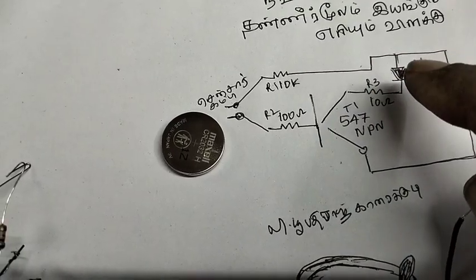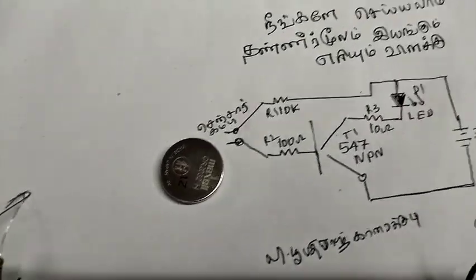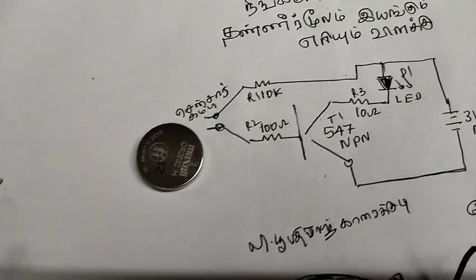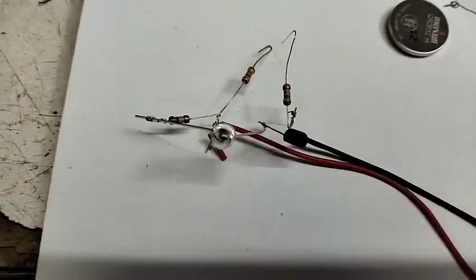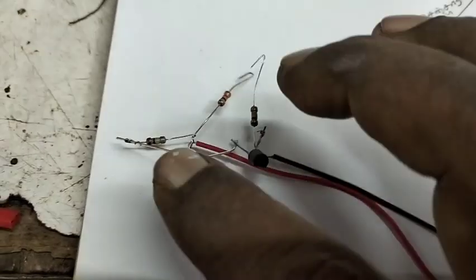This is a light area. This is a circuit. This is a design. This is a transistor. This is a LED bulb.